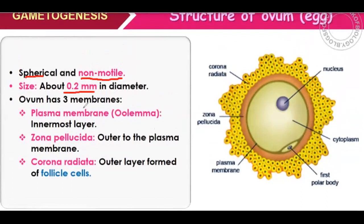There are three membranes. The first is the plasma membrane, which is called the oolemma. Then comes the zona pellucida, which is outer to the plasma membrane. Outside the zona pellucida is the corona radiata, made of follicle cells, which is also a protective layer. After fertilization, the sperm must cross all these layers to reach the egg.